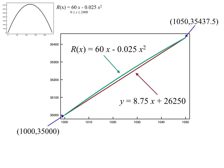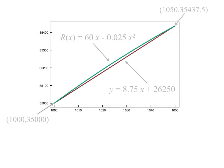One of the things you might notice immediately is that the $8.75 is present in that line. And that line hitting those two points is a secant line.